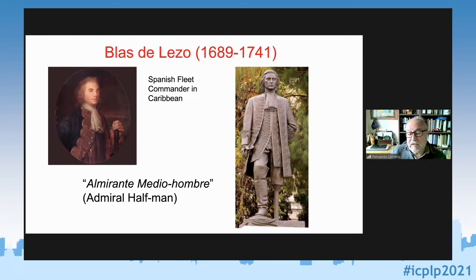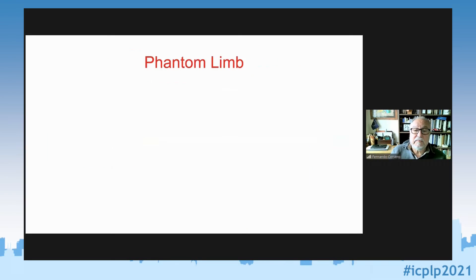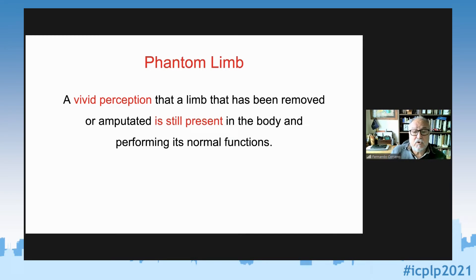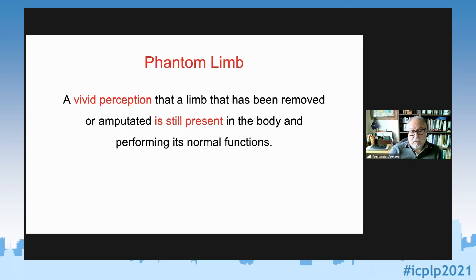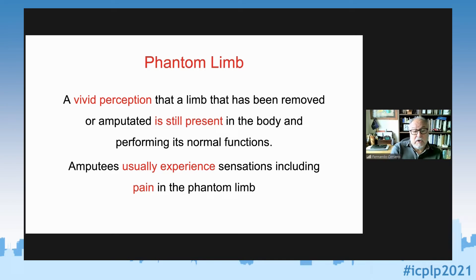What is phantom limb? It is a vivid perception — this is the important thing — a real perception that a limb which has been removed or amputated is still present in the body and performing its normal function. It is a sensory perception that the limb is still there. As a consequence, amputees usually experience sensations including pain in the phantom limb.